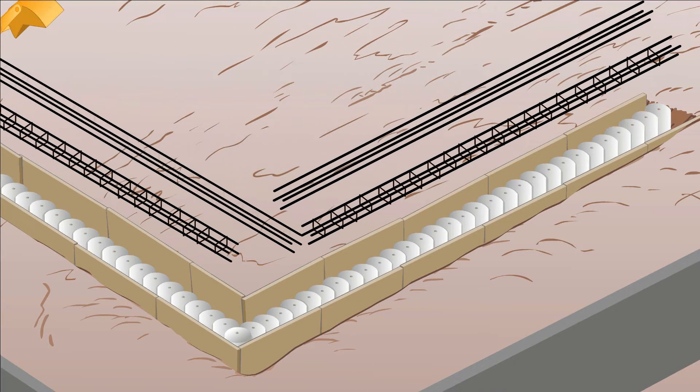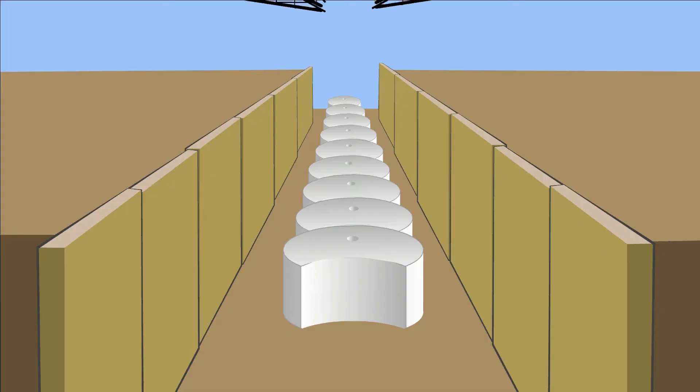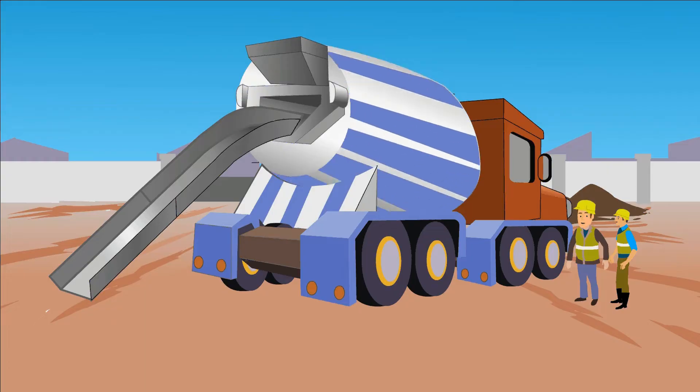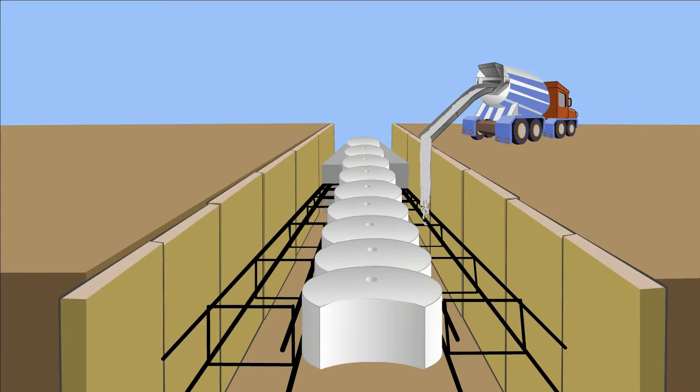The process starts with the construction of a shallow guide wall. The EPS forms are used to shape the inner curved face of the guide wall. With the reinforcement in place, concrete is poured around the forms to complete this stage.